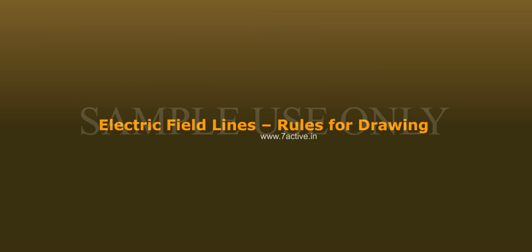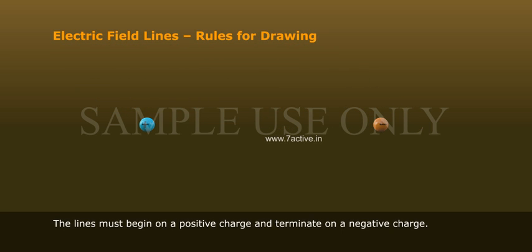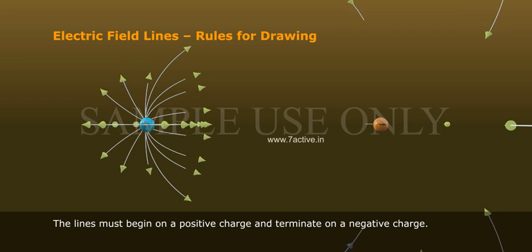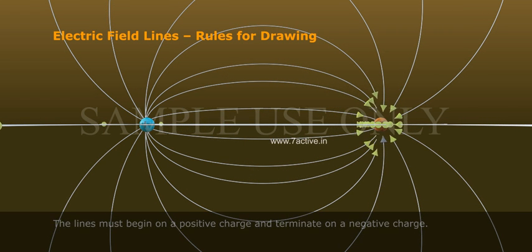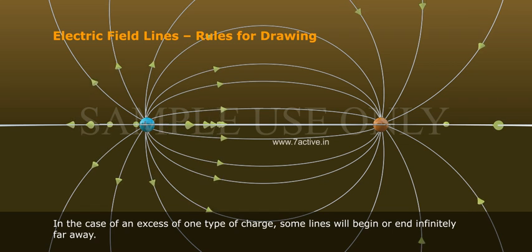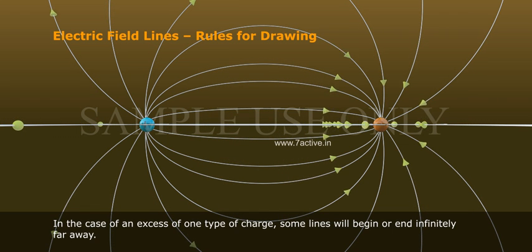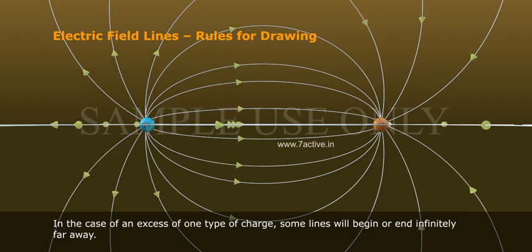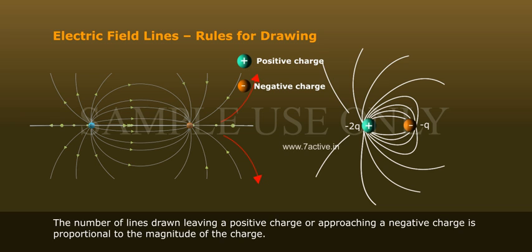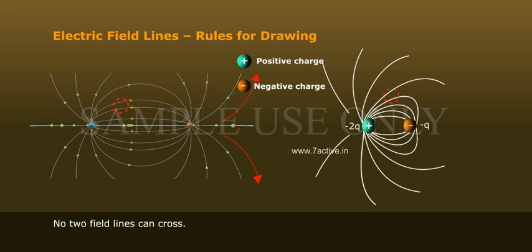Rules for Drawing Electric Field Lines: The lines must begin on a positive charge and terminate on a negative charge. In the case of an excess of one type of charge, some lines will begin or end infinitely far away. The number of lines drawn leaving a positive charge or approaching a negative charge is proportional to the magnitude of the charge. No two field lines can cross.